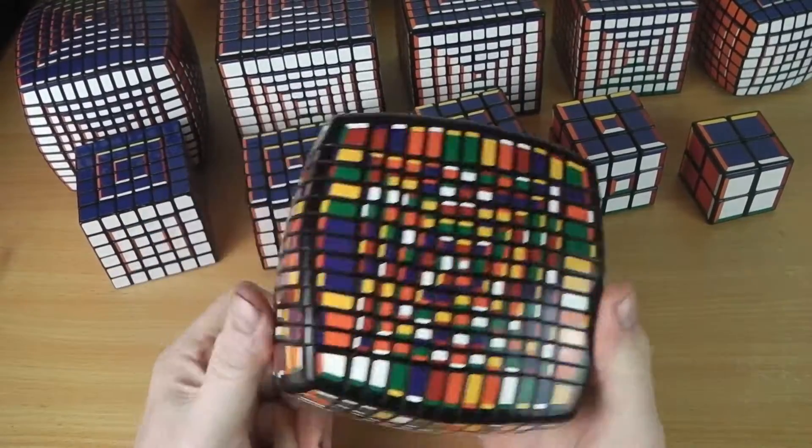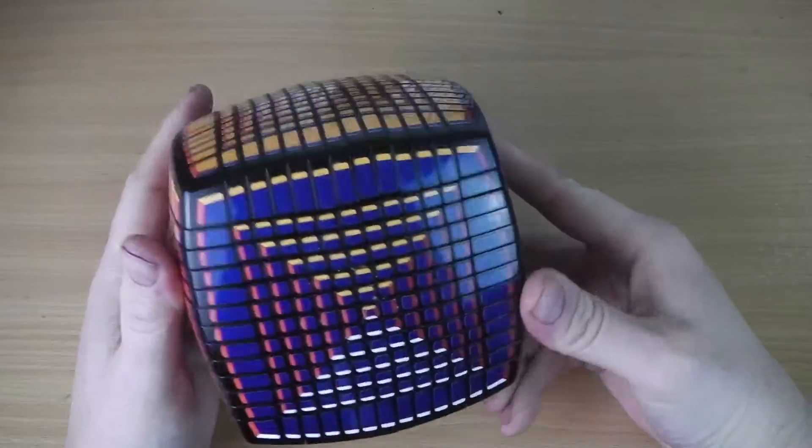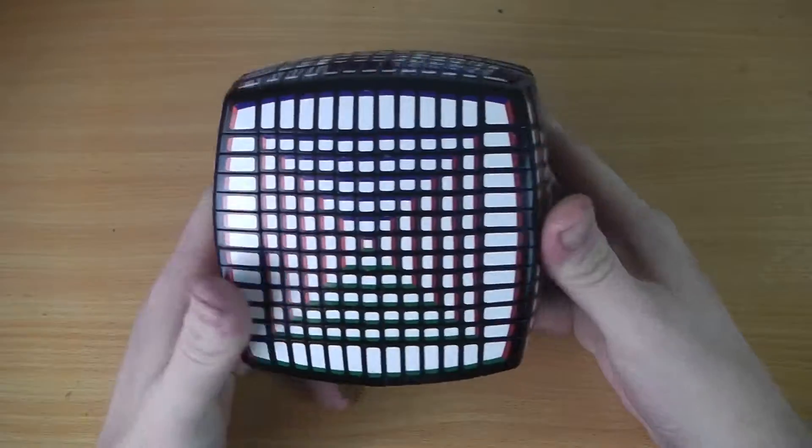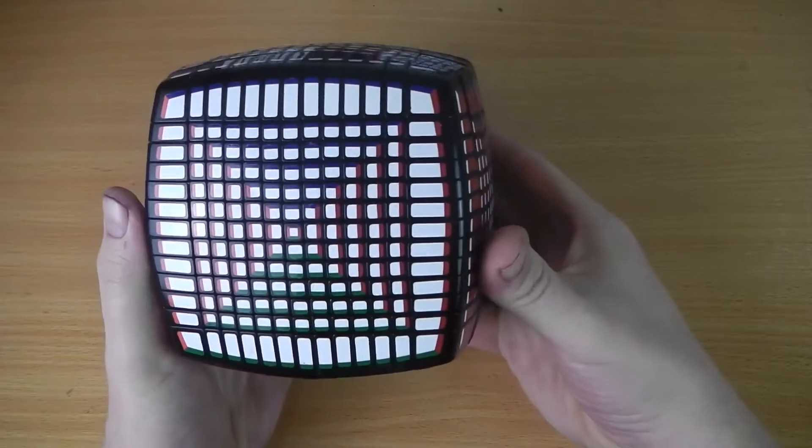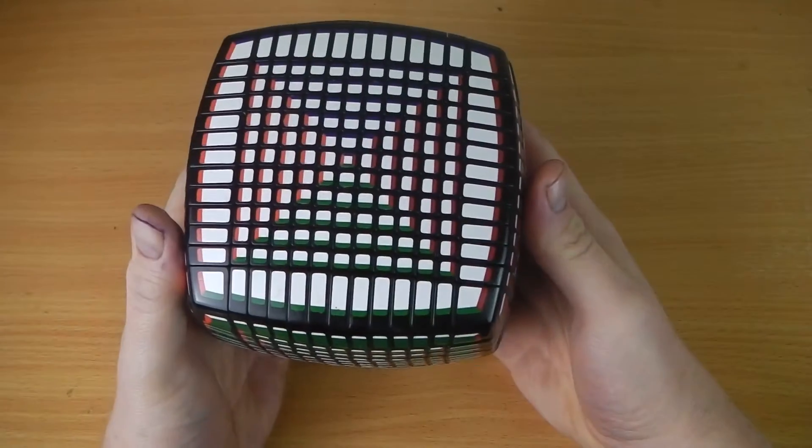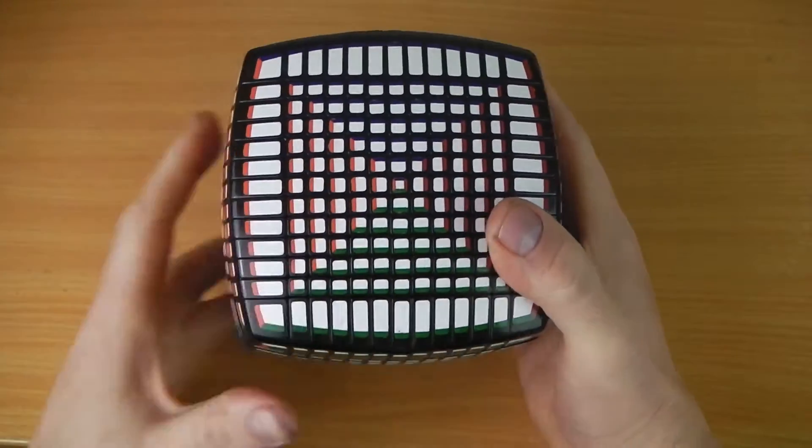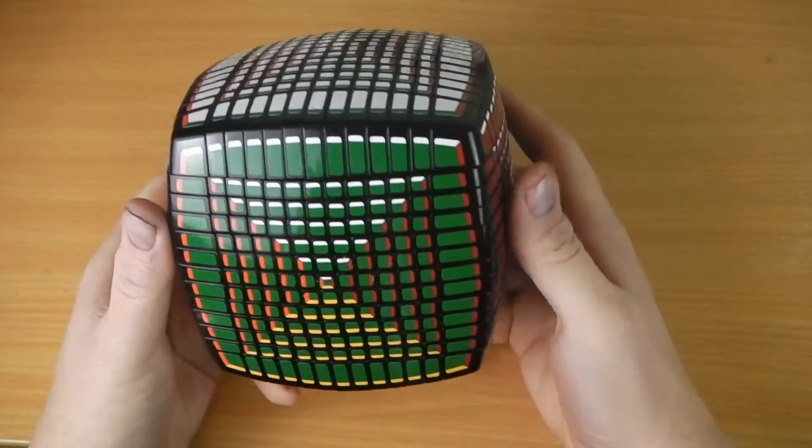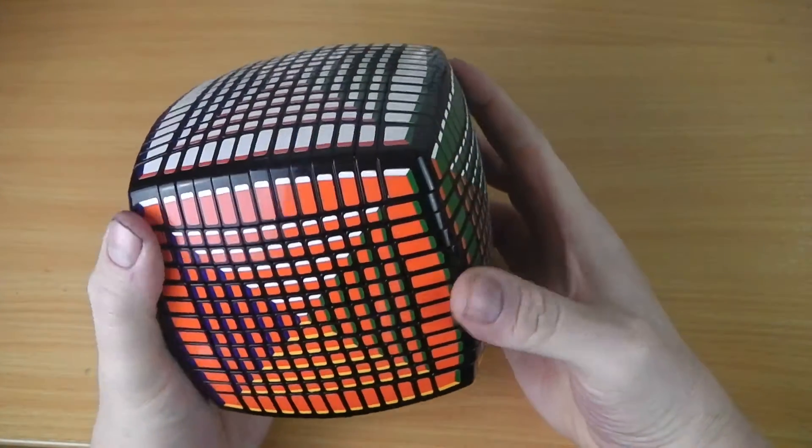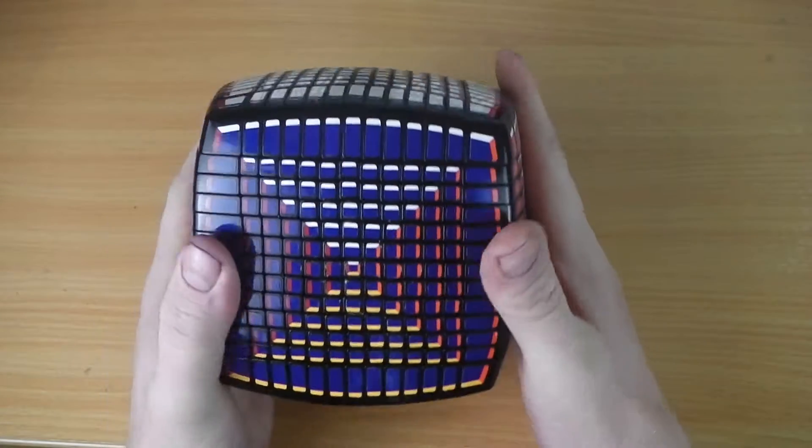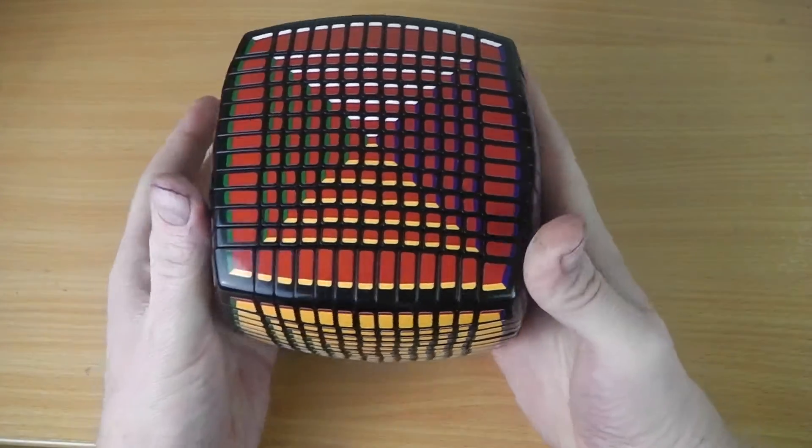As you can see, the 13x13 Pochmann Supercube is all solved again. As expected, of course, since I've solved so many in the series previously, it's not hugely extra challenging compared to the others in the series. More time consuming because you've got a couple more layers and the last few layers of this are quite time consuming anyway the way I do it. But yeah, look at this thing, it just looks absolutely fabulous.